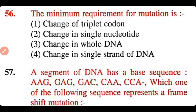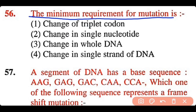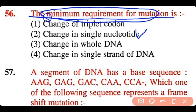Question 56: The minimum requirement for mutation is: change of triplet codon, change in single nucleotide, change in whole DNA, or change in single strand of DNA. The correct answer is option 2. The minimum requirement for a mutation to occur is a change in a single nucleotide.